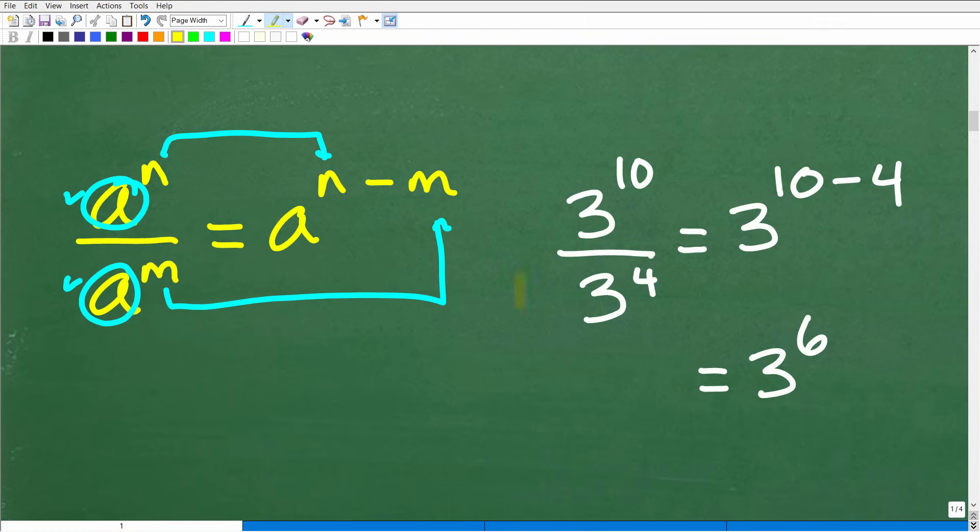Let's take a look at an example of this property. If I have three to the 10th and I'm divided by three to the fourth, notice that the bases are the same. Well, if the bases are the same, then I can apply this rule. If the bases are not the same, let's suppose that this down here was like a two. If I had like a two to the fourth, now I cannot do this problem because these bases are not the same. But if they are the same, you're like, oh, I can do this problem.